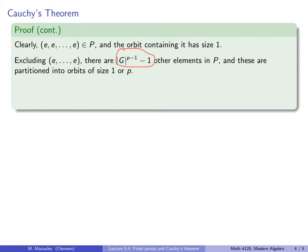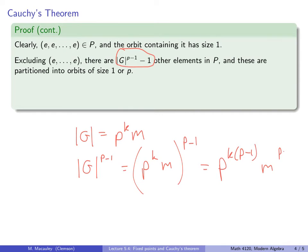So let's suppose that the order of G is, I don't know, p^k times M, where M is some other number, then |G|^(p-1) equals p^k M to the p-1. I don't know what this is, but it, well, I do know what this is. It's p^(k(p-1)). It's not really that important.